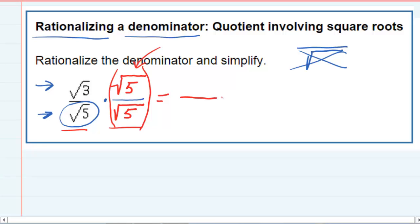So since these are fractions, I can multiply the top: square root of 3 times the square root of 5. The square root stays there. 3 times 5 is 15.